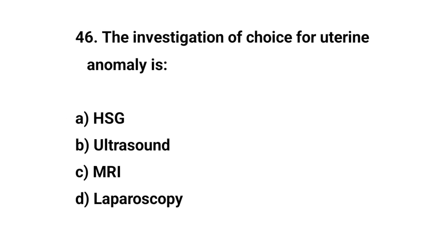Question No. 46. The investigation of choice for uterine anomaly is? Right answer is C: MRI.